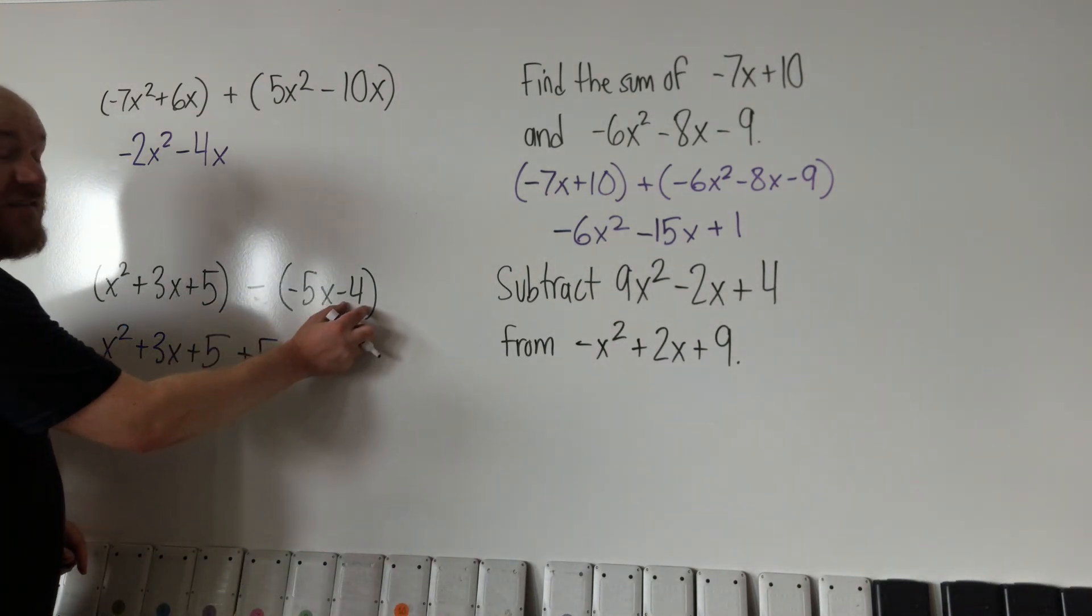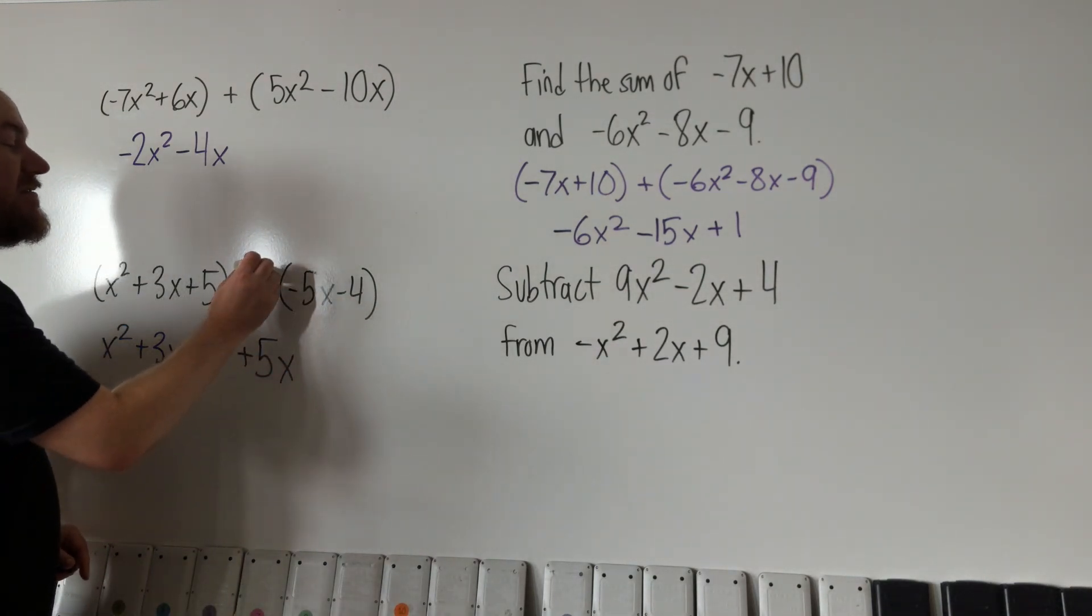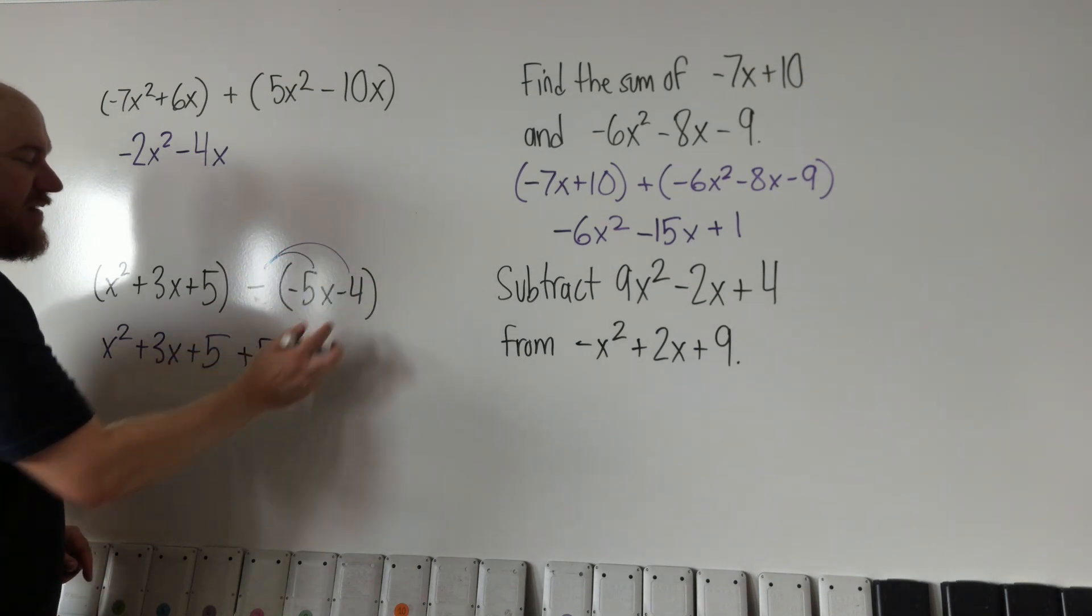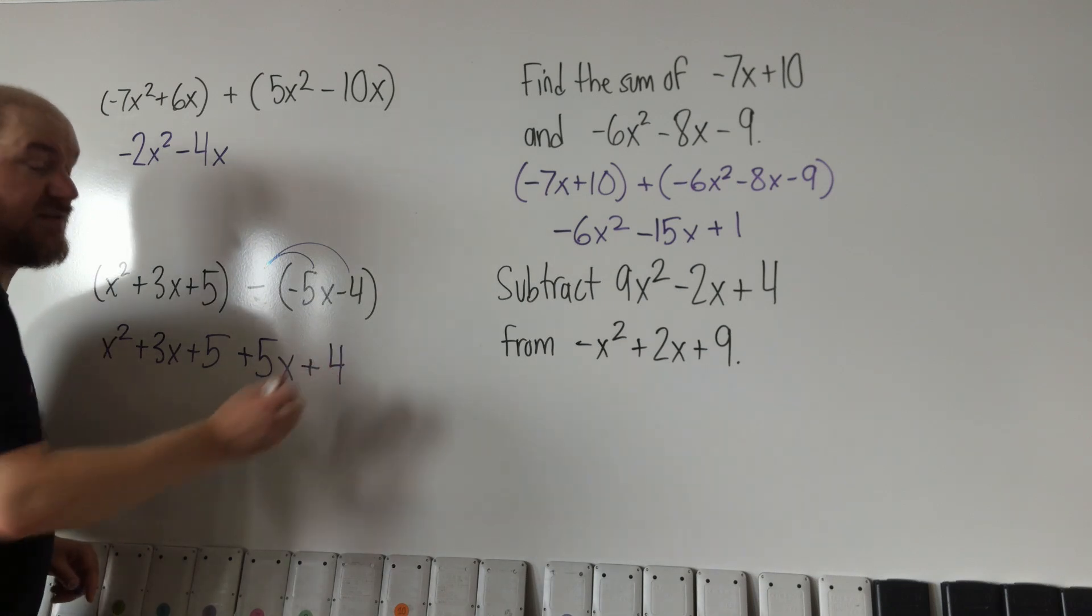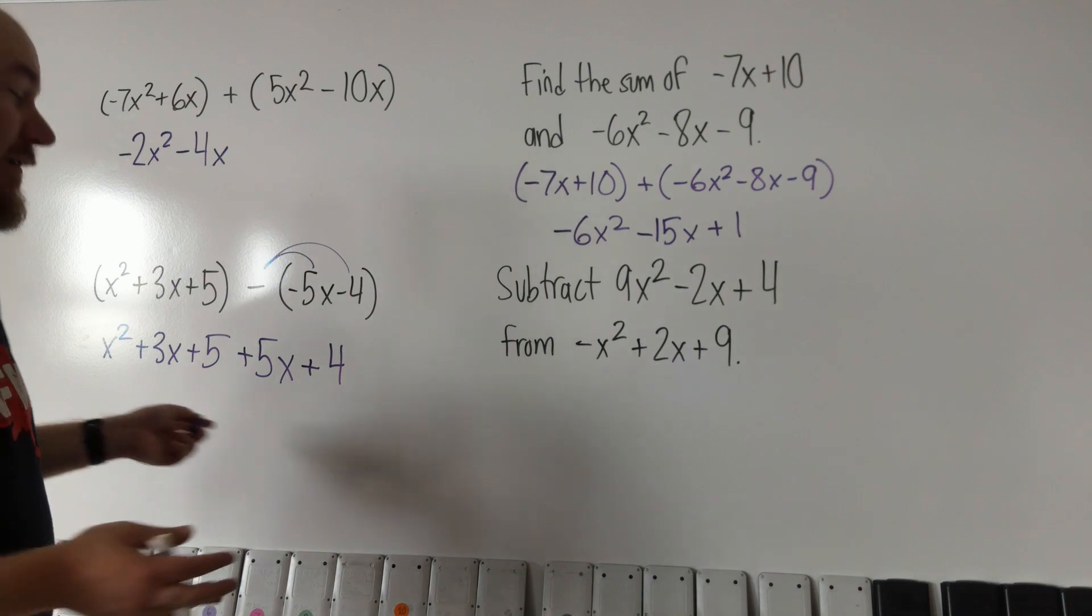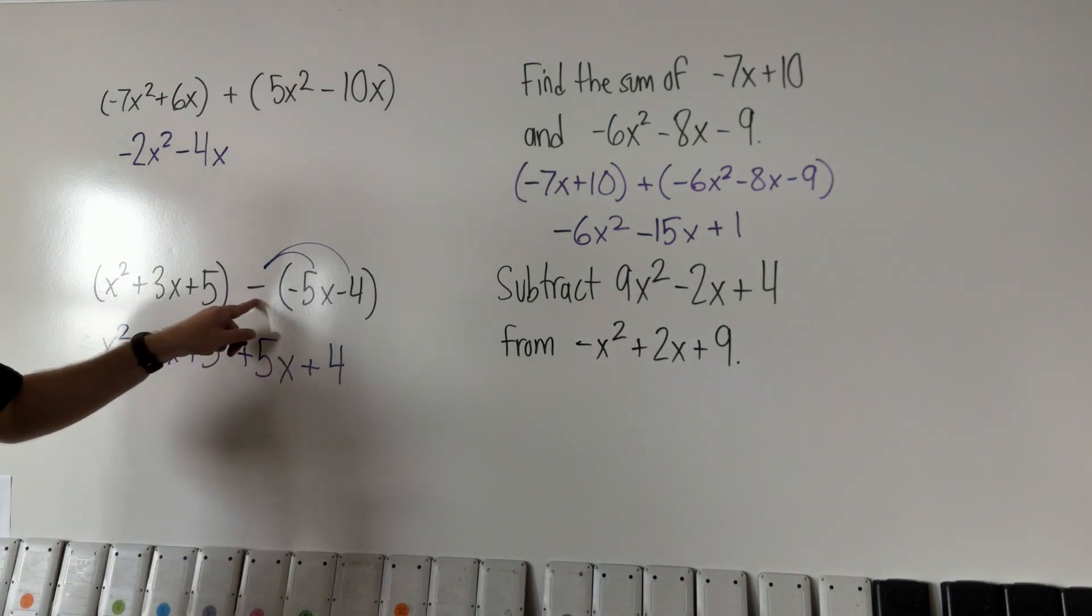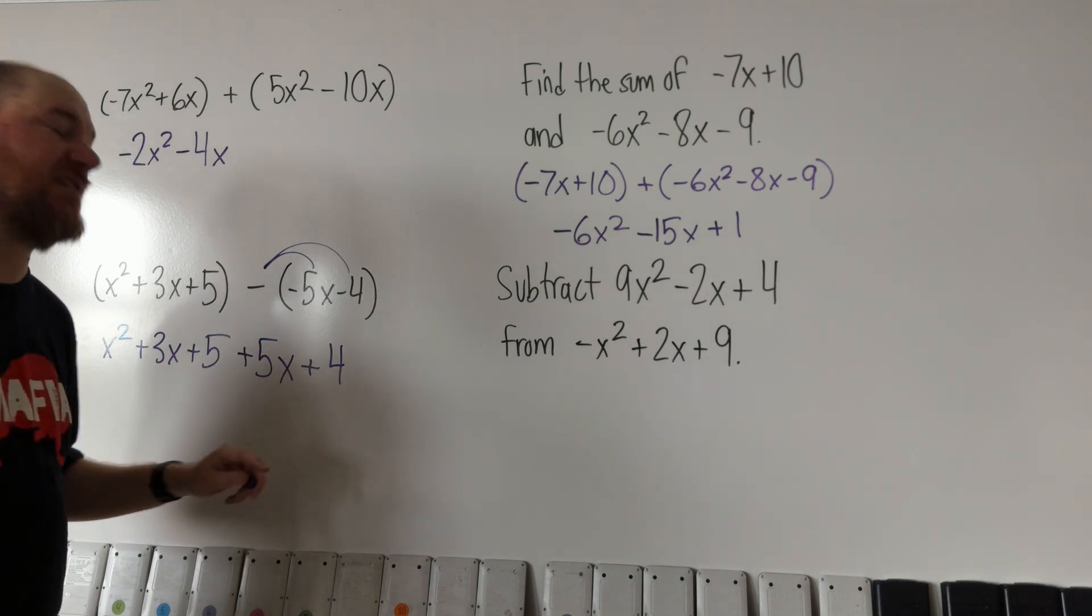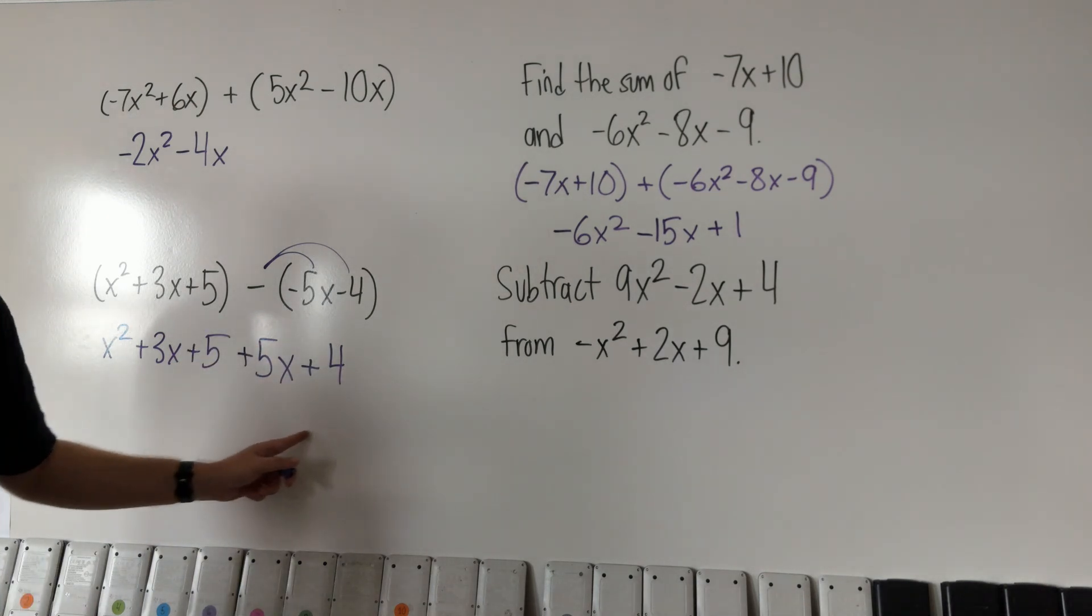And then same thing here. This is a minus and this is a minus. So if I distribute that minus, this really becomes plus 5x and that really becomes plus 4. And now that we have everything in one big statement, we don't have a minus sign that's going to some things and not to others. Now we can just combine like terms here.